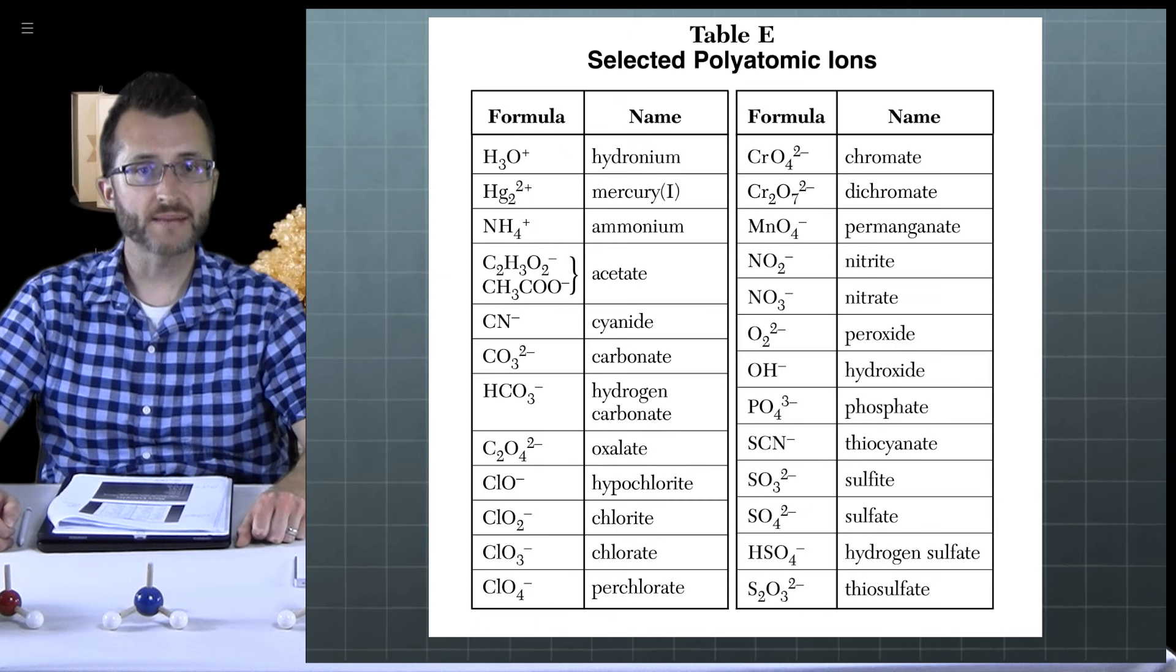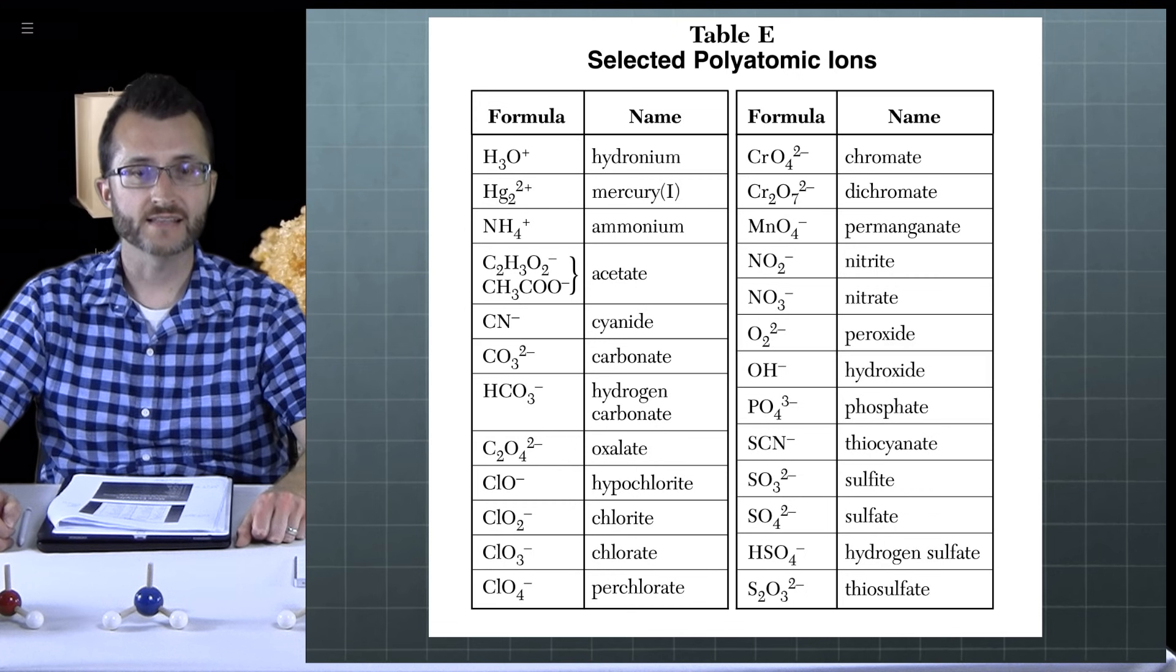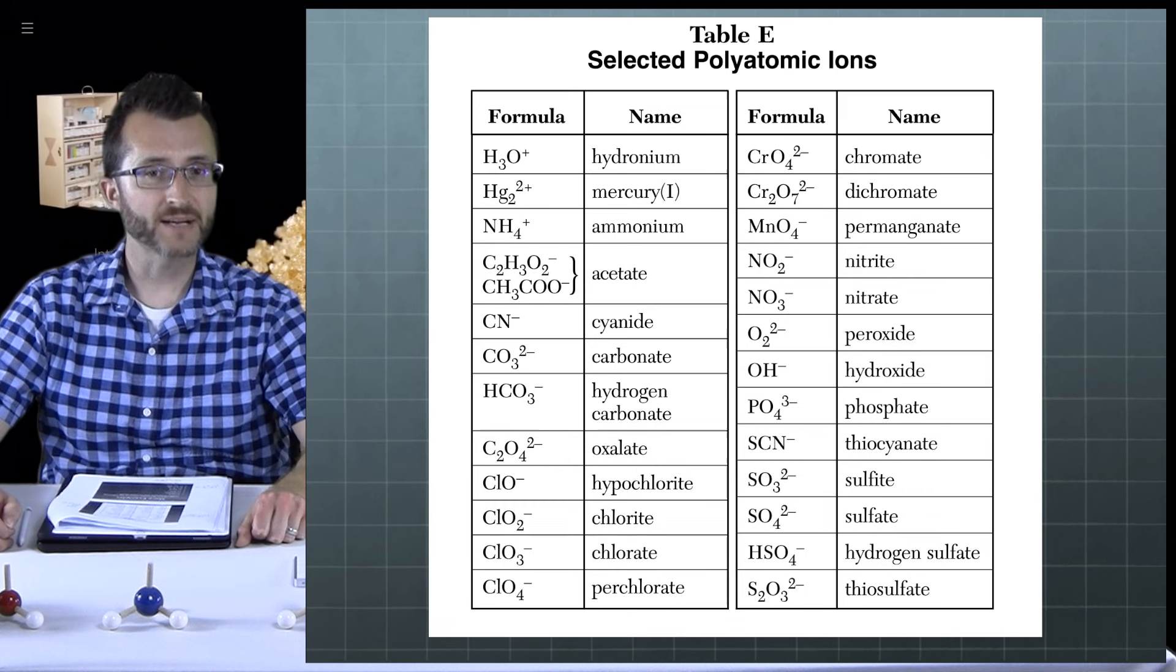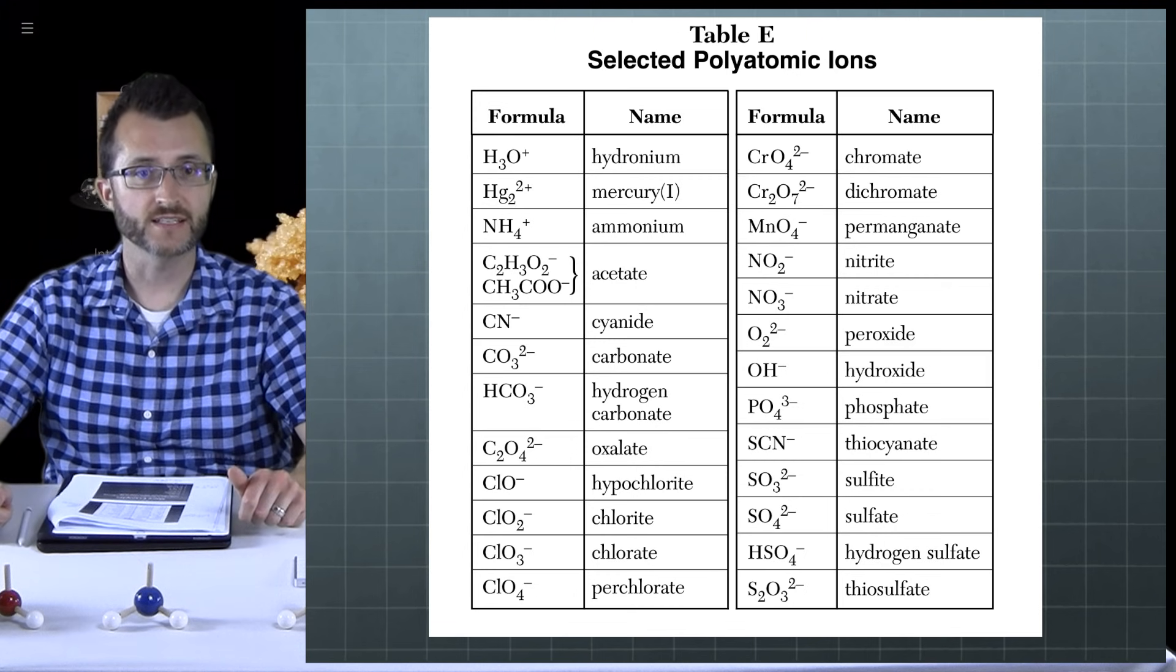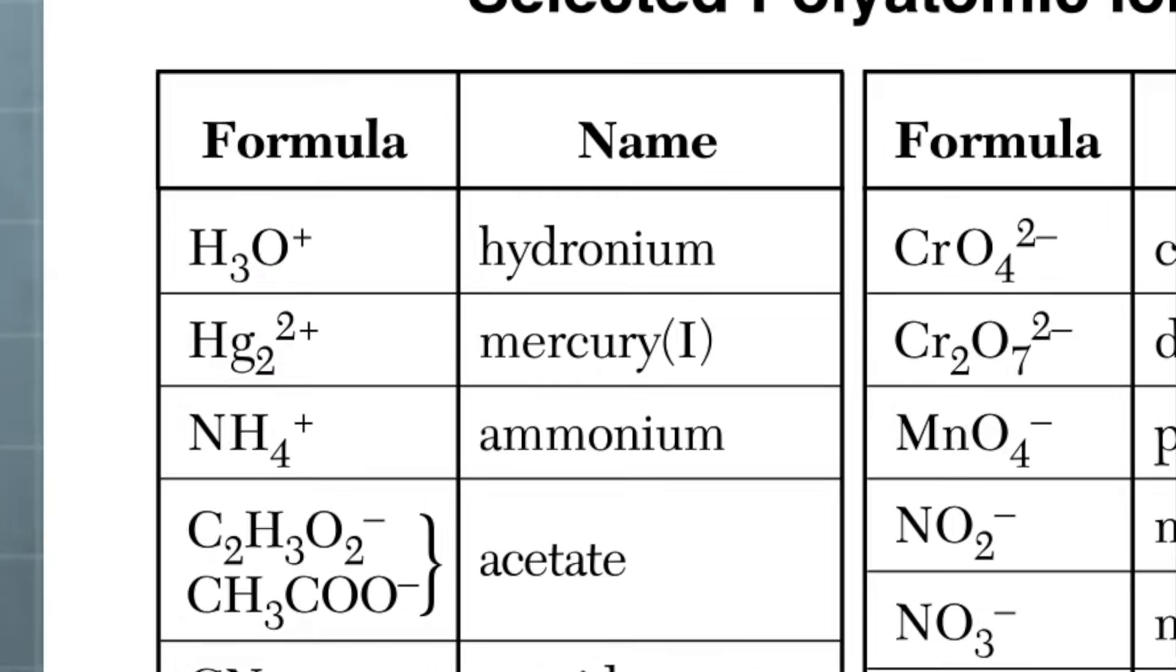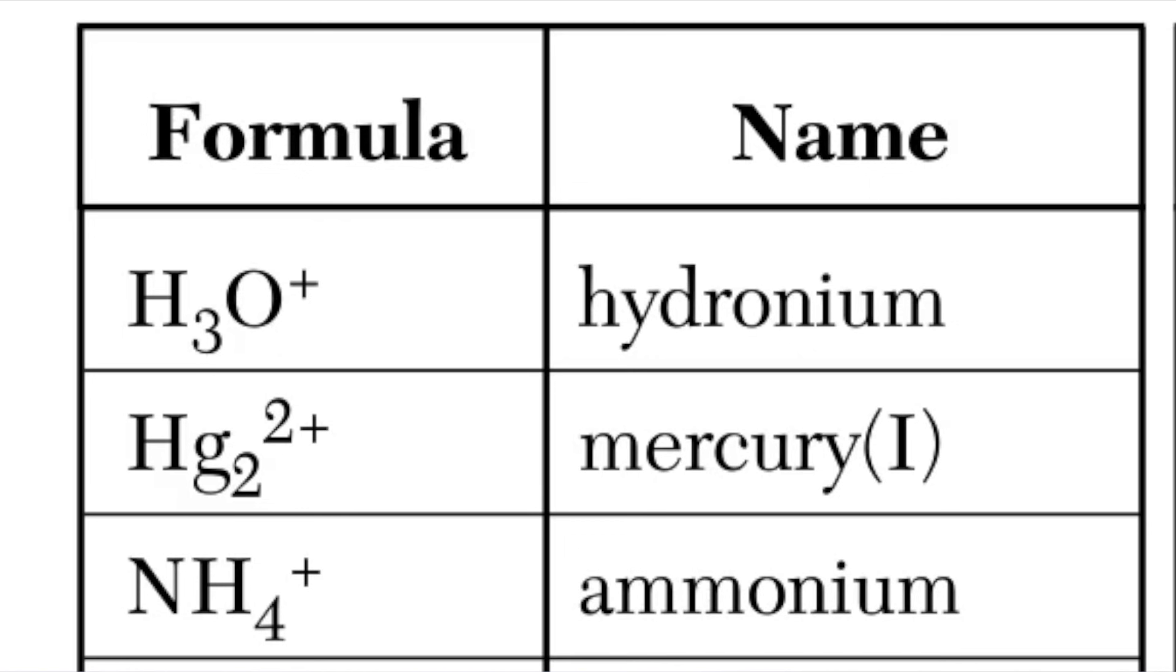Let's take a look at table E, selected polyatomic ions. Most of the polyatomic ions listed are anions, negative ions, as you can see from the charge listed. If you take a look at the first three on the left, we don't have to deal with these too often. H3O+ hydronium is used in a later unit, acids and bases. Hg2 2+ is actually only metals. It doesn't fit our traditional definition of more than one non-metal being bonded together. The one you do have to worry about that's positive, though, is ammonium, NH4+.